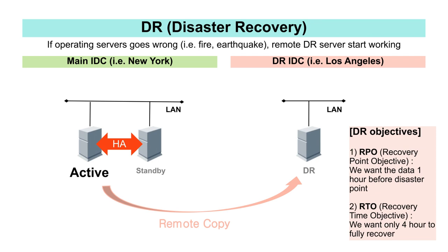Next is DR, or disaster recovery. HA means that even if one server fails, other servers next to it take over. However, there are cases where the entire IDC may suffer serious damage due to fire or earthquake, and in this case HA is of no use. So, we prepare a server at another remote IDC. Even if all servers operating in HA fail, the DR server in the remote IDC will operate.